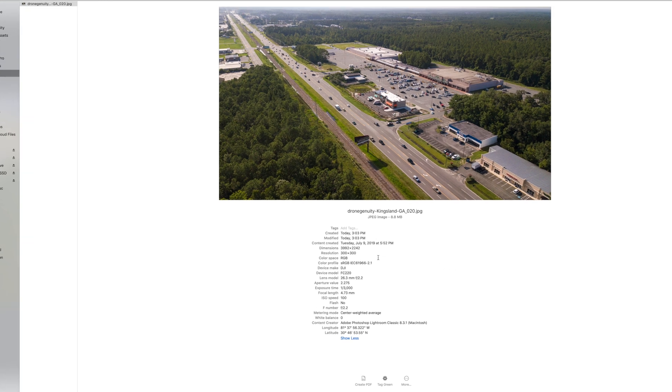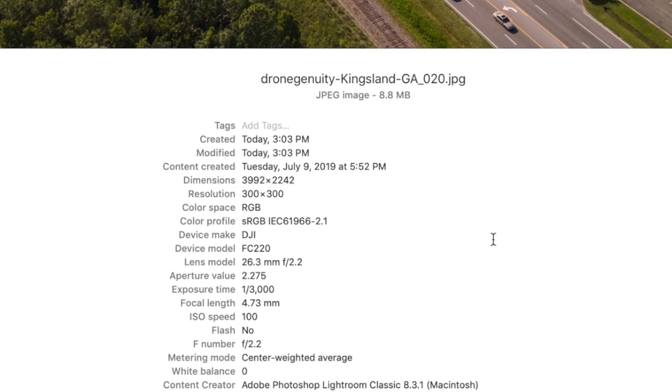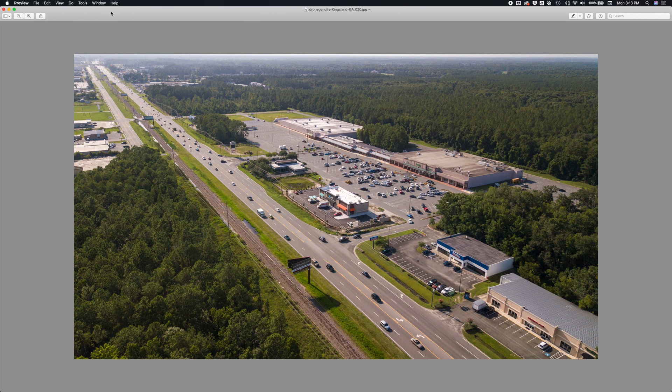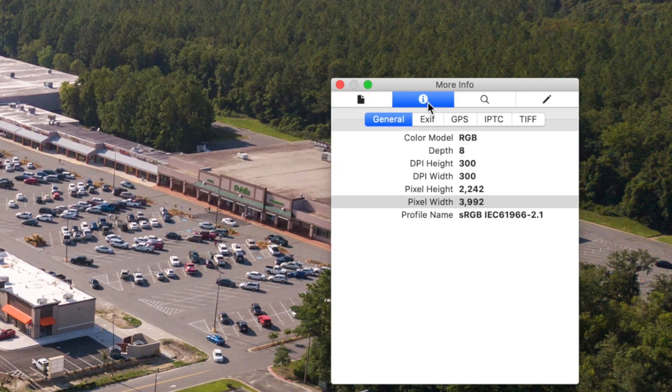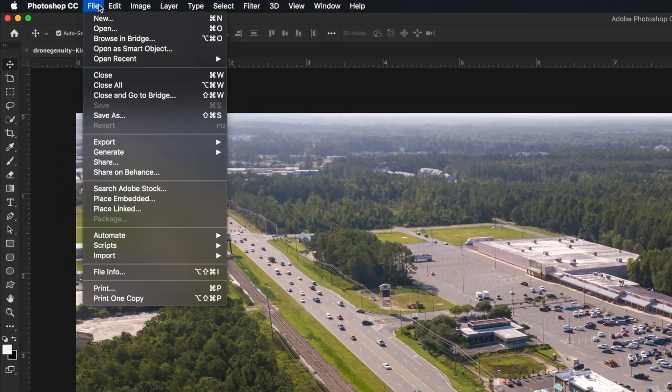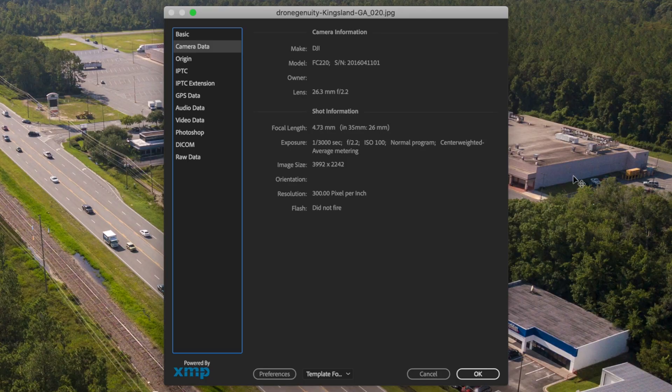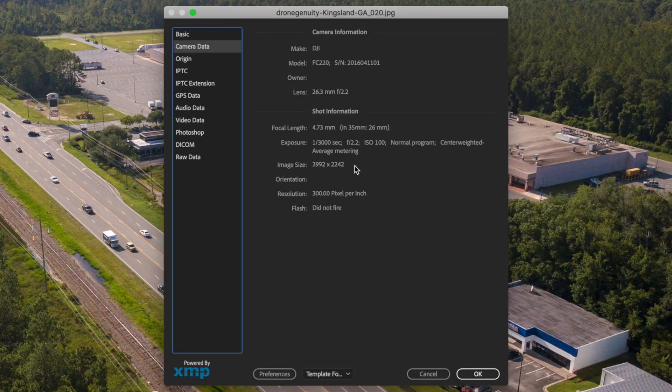You can find this by looking at the file in a file browser on both Mac or PC, by opening the file in preview on a Mac and going to tools show inspector and clicking on the info button, or by using an application like Adobe Photoshop and going to file file info.